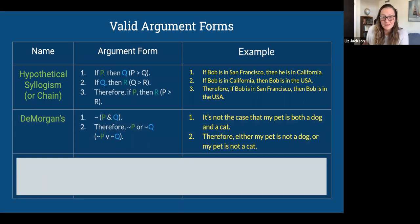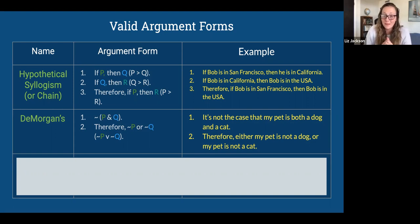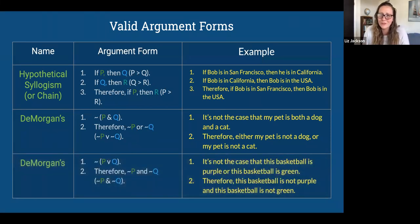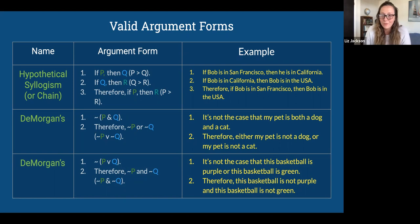There are two DeMorgan rules that use negation with 'and' and 'or' to give useful translations. First: if it's not the case that P and Q, you can conclude not-P or not-Q. So if it's not the case that my pet is a dog and my pet is a cat, therefore either my pet is not a dog or my pet is not a cat. Second: if it's not the case that P or Q is true, then you can conclude not-P and not-Q. If it's not the case that this basketball is purple or green, you can conclude it's not purple and not green.